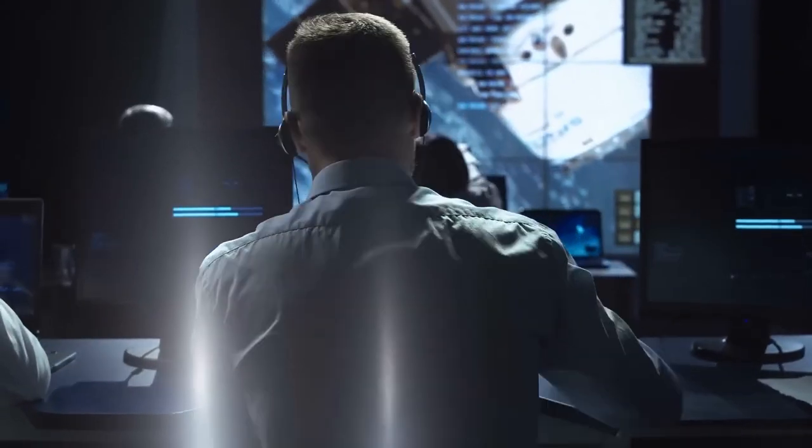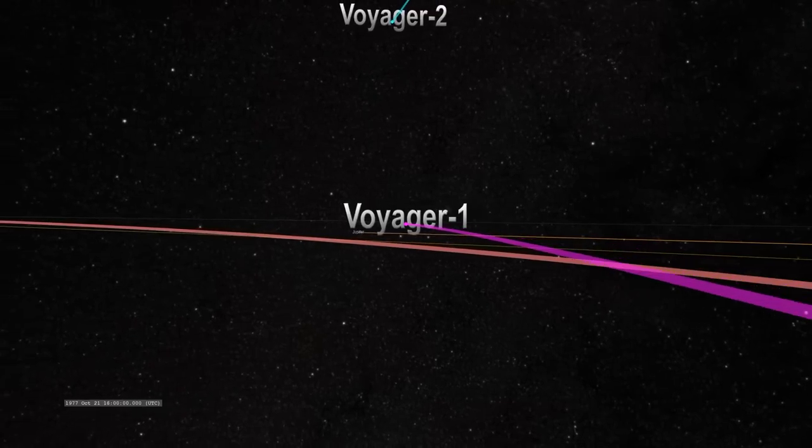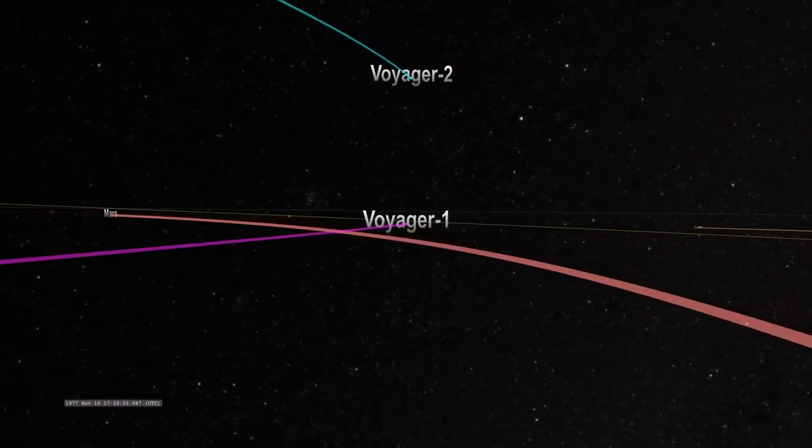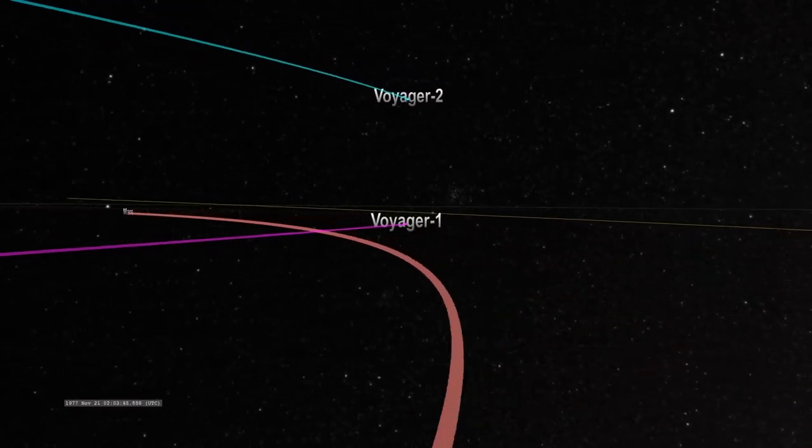But despite NASA officials' initial expectations, Voyager 1 and Voyager 2 are still traveling and collecting important scientific data from the furthest reaches of space.